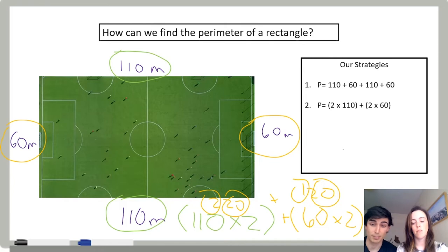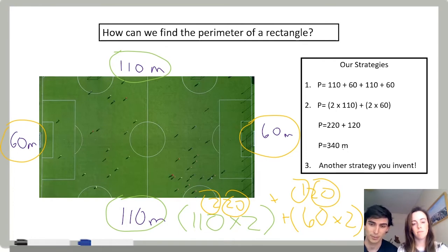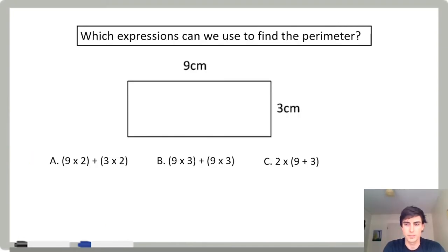So we found the same calculation of the perimeter using two different strategies. I wonder if you can come up with your own strategy to find the perimeter as well. Now that we have some strategies for finding the perimeter of a rectangle, let's use them to solve a problem.